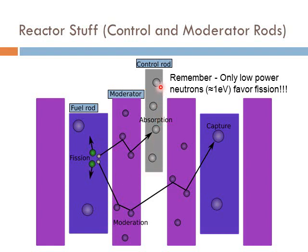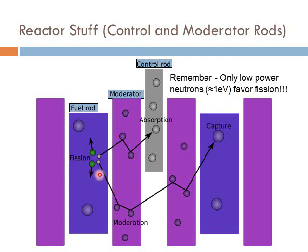A key fact: fission prefers neutrons with a kinetic energy of about one eV, which is not a lot. When you first split an atom, those neutrons have about two mega-eV of energy — far too much. The moderator's purpose is to slow down those neutrons so that by the time they reach the next fuel rod, they are slow enough to be favorably captured, increasing the odds of splitting the next atom. The light purple region in the diagram represents the moderator.